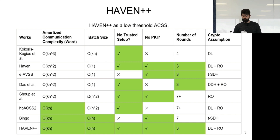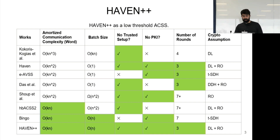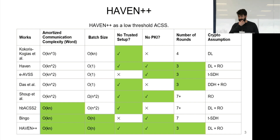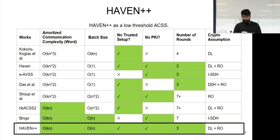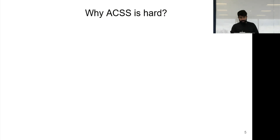The amortization kicks in when sharing O(N) secrets. Haven++ has no PKI or trusted setup, an optimal number of rounds of just three, and relies on the random oracle model and the hardness of discrete log. Why is ACSS hard? Consensus is hard, especially in asynchrony, and requiring everyone to have shares in the presence of a malicious dealer also doesn't help.